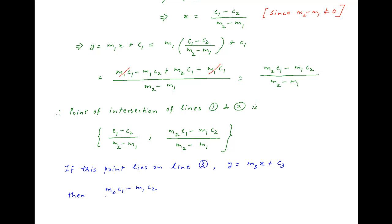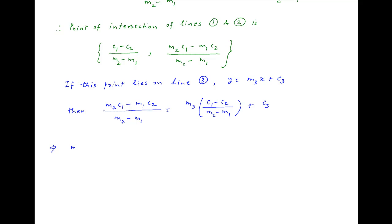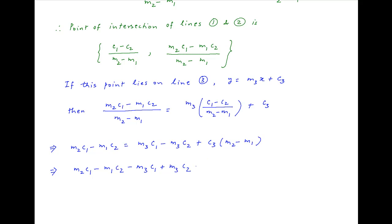Therefore, m2c1 minus m1c2 upon m2 minus m1 equals m3 times c1 minus c2 upon m2 minus m1 plus c3. Multiplying both sides by m2 minus m1, we get m2c1 minus m1c2 equals m3c1 minus m3c2 plus c3 times m2 minus m1. This implies that m2c1 minus m1c2 minus m3c1 plus m3c2 minus c3m2 plus c3m1 equals 0.